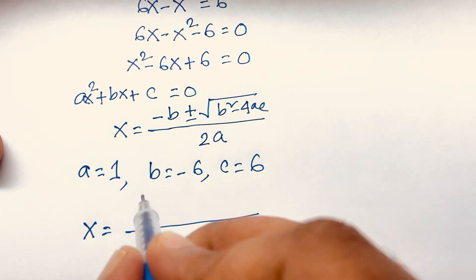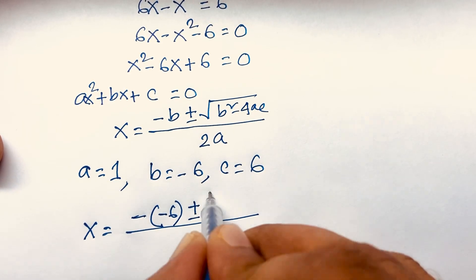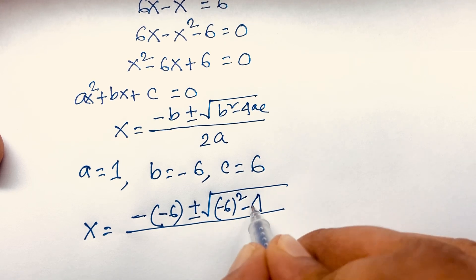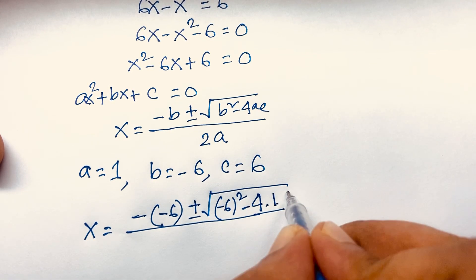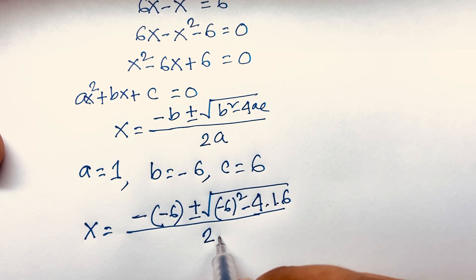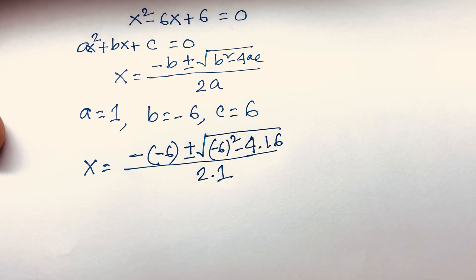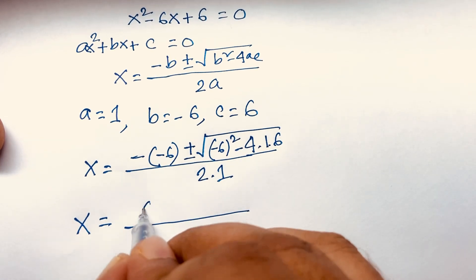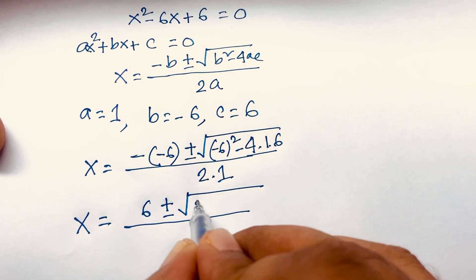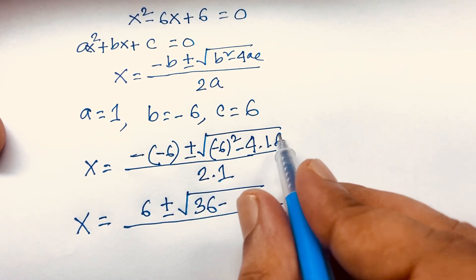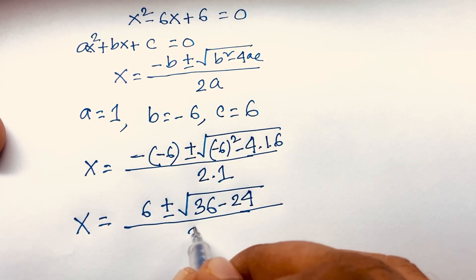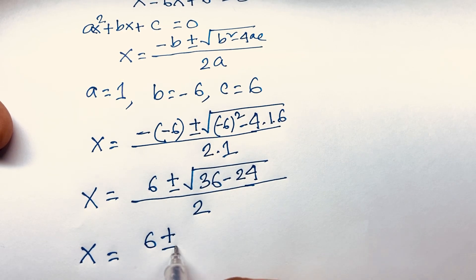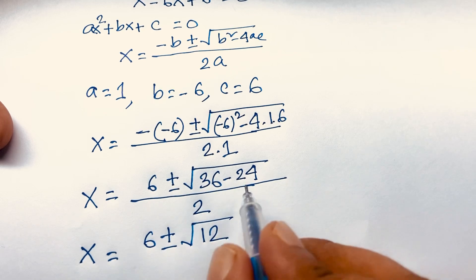Substituting into the quadratic formula: x equals negative (negative 6) plus or minus square root of (negative 6) squared minus 4 times 1 times 6, over 2 times 1. This gives x equals 6 plus or minus square root of 36 minus 24, over 2.